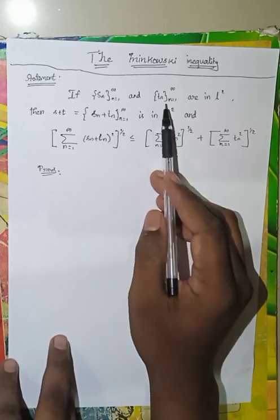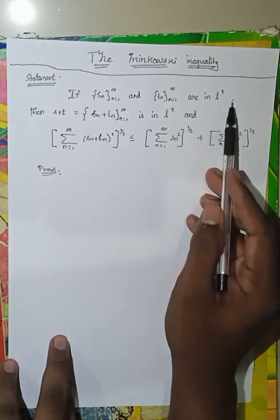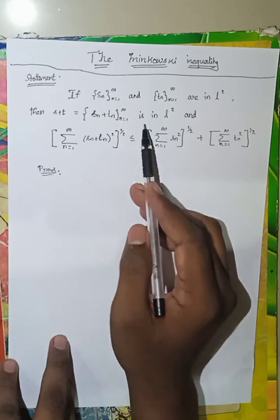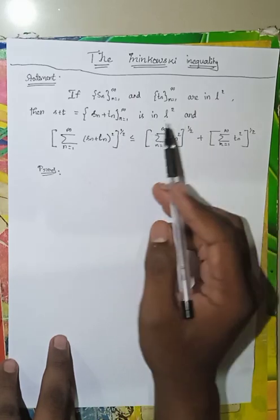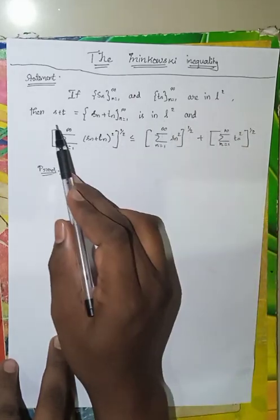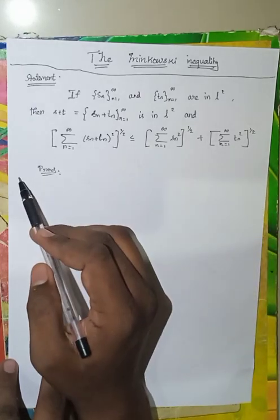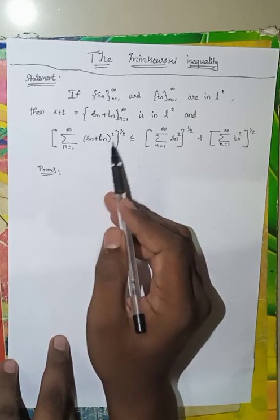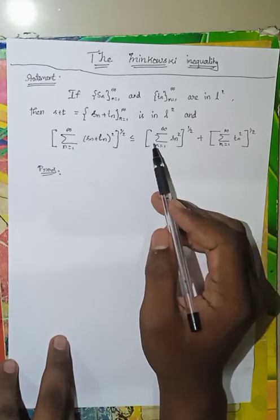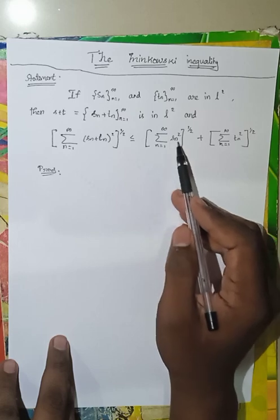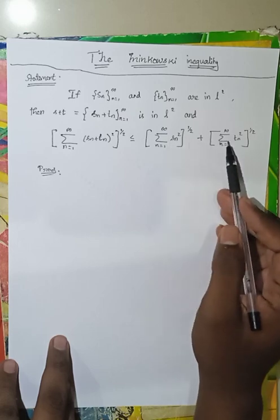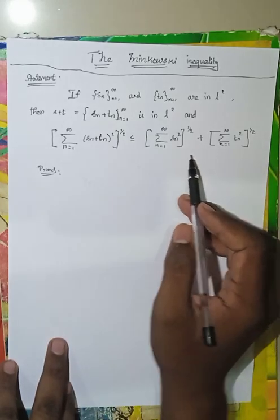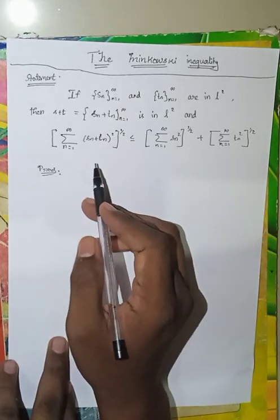If the sequence {Sn}, n=1 to infinity, and {Tn}, n=1 to infinity, are in L2, then the sequence {Sn + Tn} is also in L2. We have to prove this inequality: the summation from n=1 to infinity of (Sn + Tn)² to the power 1/2 is less than or equal to the summation of Sn² to the power 1/2, plus the summation of Tn² to the power 1/2. This is the triangle squares inequality.